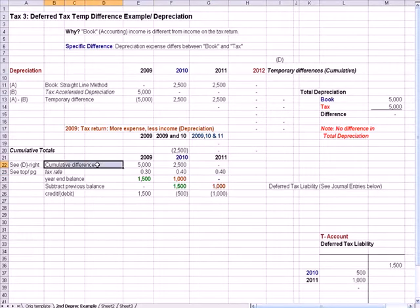We have a line here that says our cumulative difference. That means the difference in all years so far. In 2009, we only have one year's worth, $5,000. You'll notice that the debits are positive numbers and the credits are negative numbers just to make the math a little easier. We have a $5,000 credit.